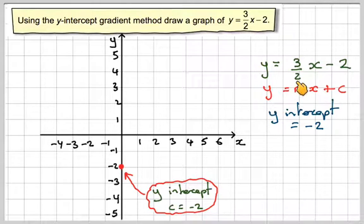And we've got a gradient here now of 3 over 2. What does that mean? That means for every two squares that go along, I will go up 3.